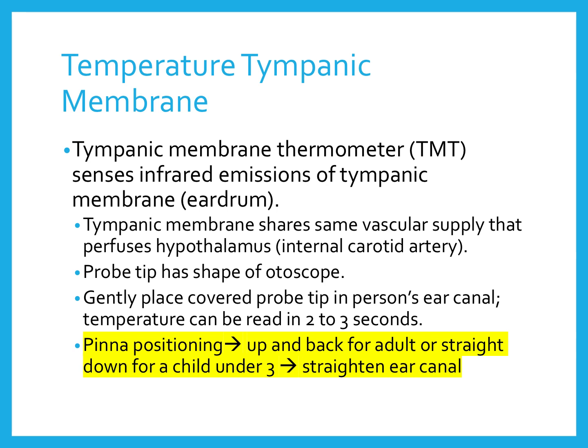The tympanic membrane route is in the eardrum, and it shares the same vascular supply that perfuses the internal carotid artery. The probe tip is shaped like an otoscope. You place the probe tip in the ear canal — pulling the top of the ear up and back for adults, or down and back for children under three — to straighten the ear canal and get a reading in a couple of seconds.